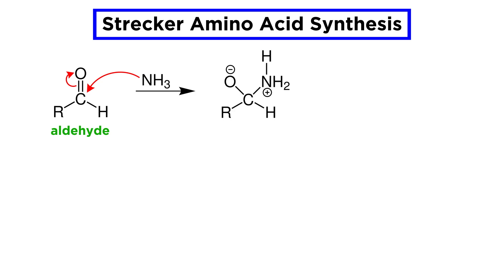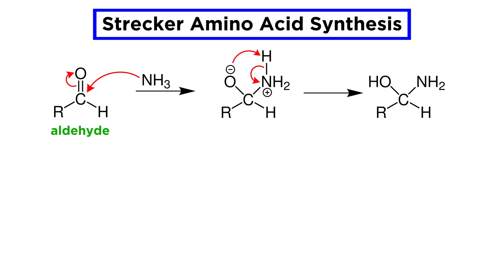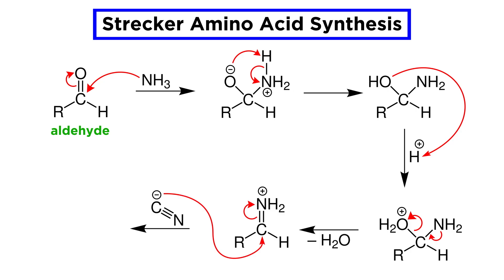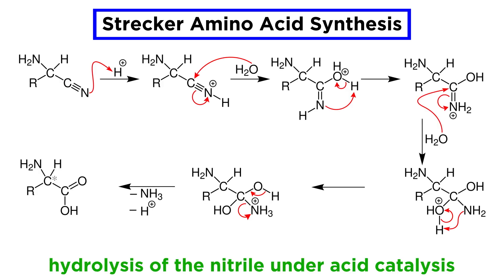The mechanism of the reaction is believed to proceed at first just like imine formation, which we learned about in a previous tutorial. Then the cyanide ion attacks to give the aminonitrile. Hydrolysis of the nitrile then occurs over several steps under acid catalysis, again via chemistry we have already learned, and there is our amino acid.